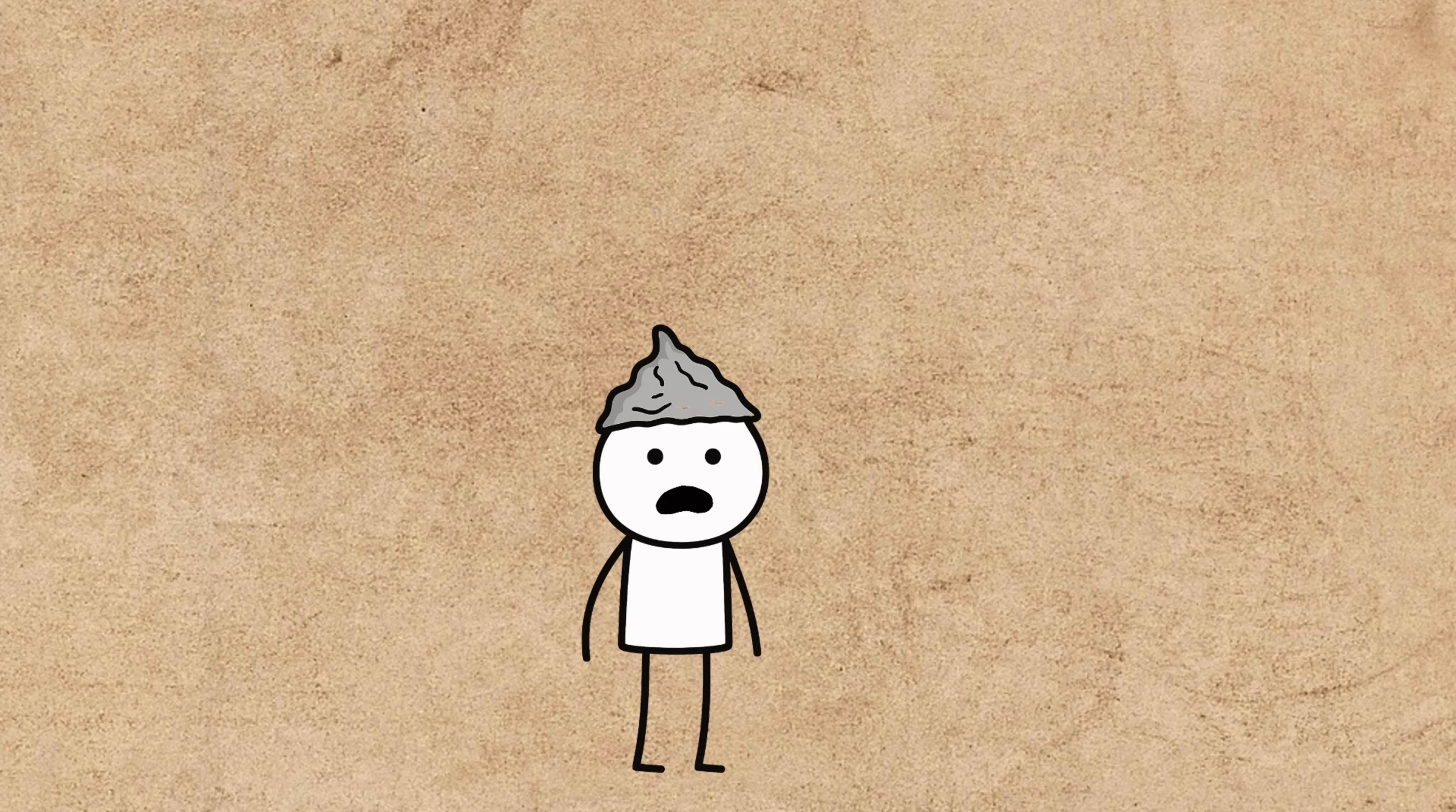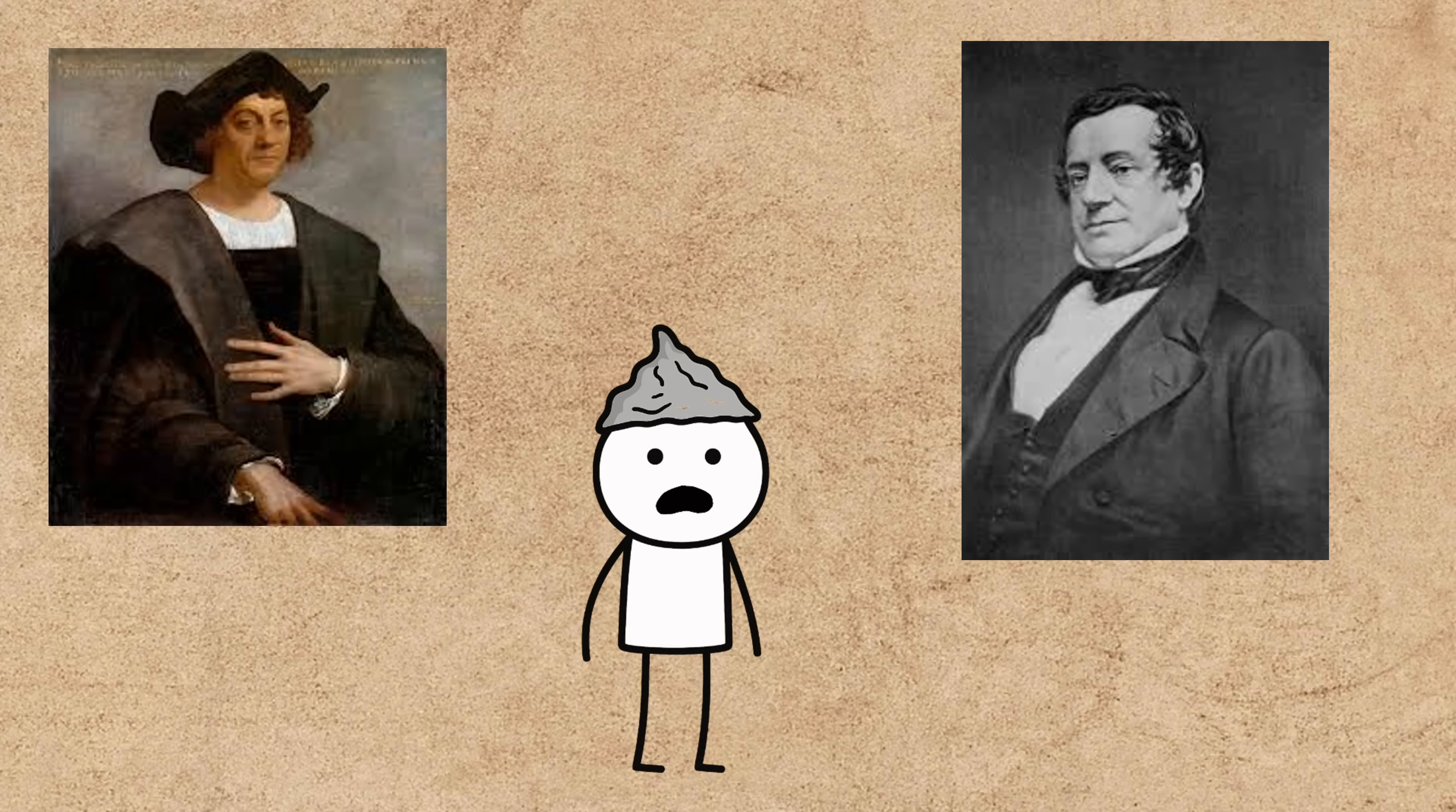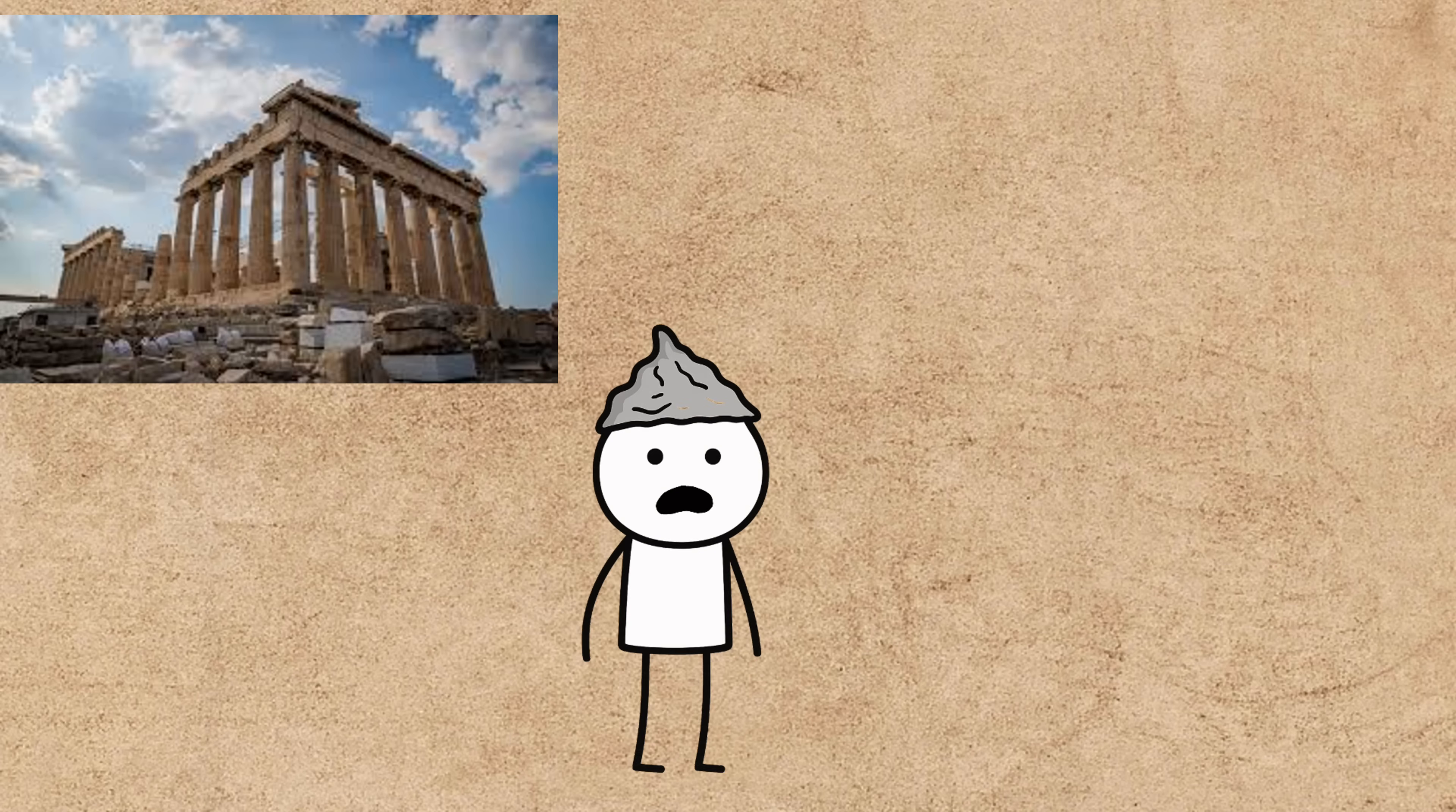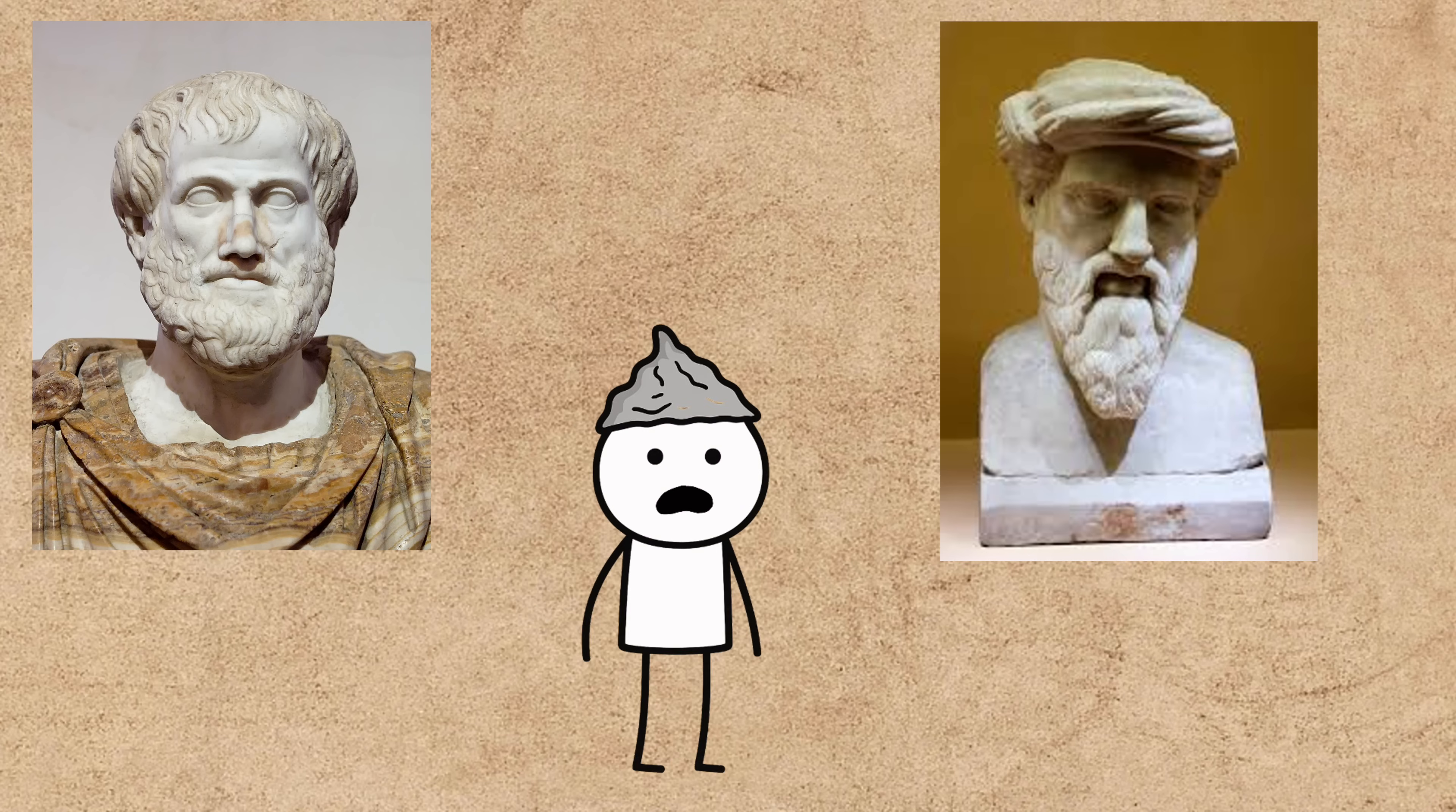Now, here's a massive misconception: that everyone in the Middle Ages thought the Earth was flat until Columbus proved them wrong. That's actually a myth cooked up in the 19th century, largely by author Washington Irving. In reality, the knowledge that the Earth was a sphere has been around since at least the ancient Greeks. Around 500 BCE, thinkers like Pythagoras figured out Earth's shape, and by Aristotle's time, it was an established fact among educated people.